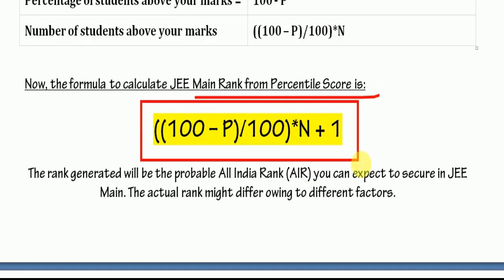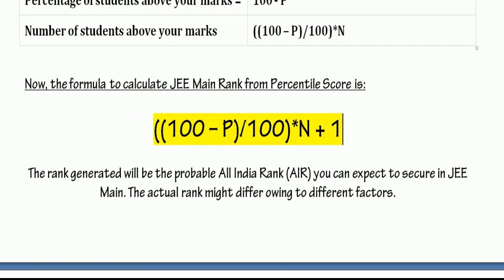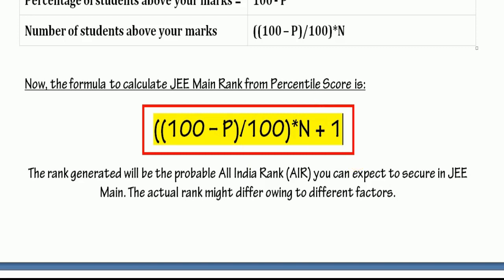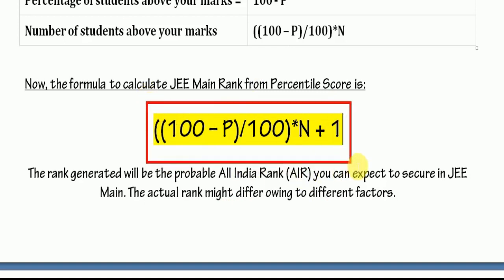Using this formula you can find your approximate JEE Main rank. Keep in mind that the actual rank might be different because NTA considers different factors every time. It also depends on how many students appeared for the exam. So the rank you get from this formula is an approximate rank, which can help you plan your preparation for the next session accordingly.